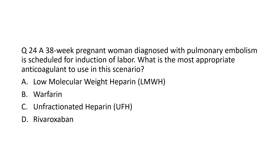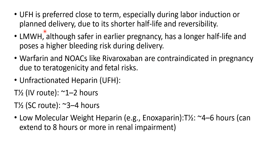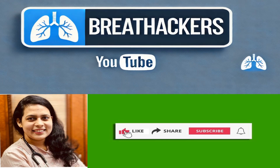Next question: a 38-week pregnant woman diagnosed with pulmonary embolism is scheduled for induction of labor. What is the most appropriate anticoagulant? Options are LMWH, warfarin, UFH, or rivaroxaban. UFH is preferred close to term pregnancy, especially during labor induction, because it has a shorter half-life — 1 to 2 hours IV, 3 to 4 hours subcutaneously — and is reversible. LMWH has a slightly longer half-life of 4 to 6 hours and can pose higher bleeding risk during delivery. Warfarin and NOACs are contraindicated in pregnancy due to teratogenicity and fetal risk.